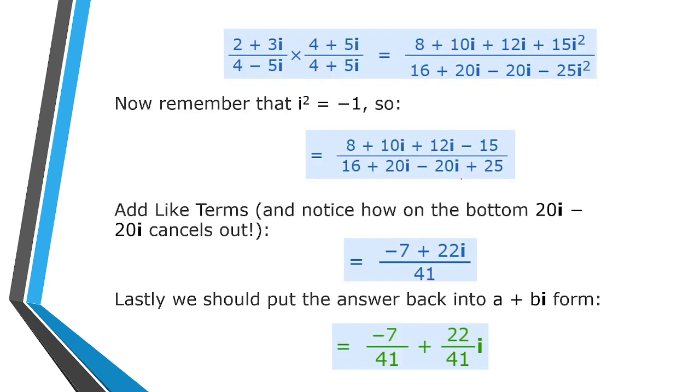Now remember that i² equals -1, so 8+10i+12i-15 over 16+20i-20i+25. Add the like terms, and notice how on the bottom 20i minus 20i cancels out. So we have equal to (-7+22i)/41. Lastly, we should put the answer back into a+bi form, so we have -7/41 + 22/41 i.